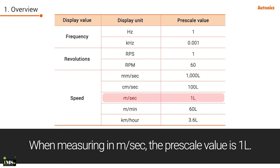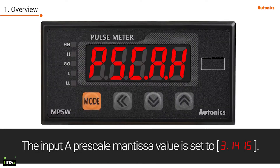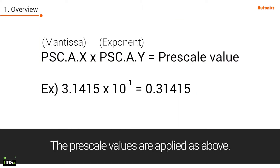When measuring in meters per second, the per scale value is 1 times L. The calculation method is as shown. The input A per scale mantissa value is set to 3.1415, and the exponent value is set to 10 to the power of minus 1. The per scale values are applied as above.